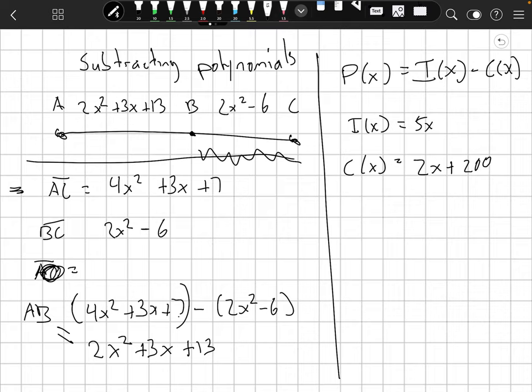Okay. Here's one other example of subtraction. You might remember profit equals income minus cost. So if my income function is 5 times the number of items. So $5 for each item sold. And my cost function is $2 for each item made plus 200. It might look something like this.